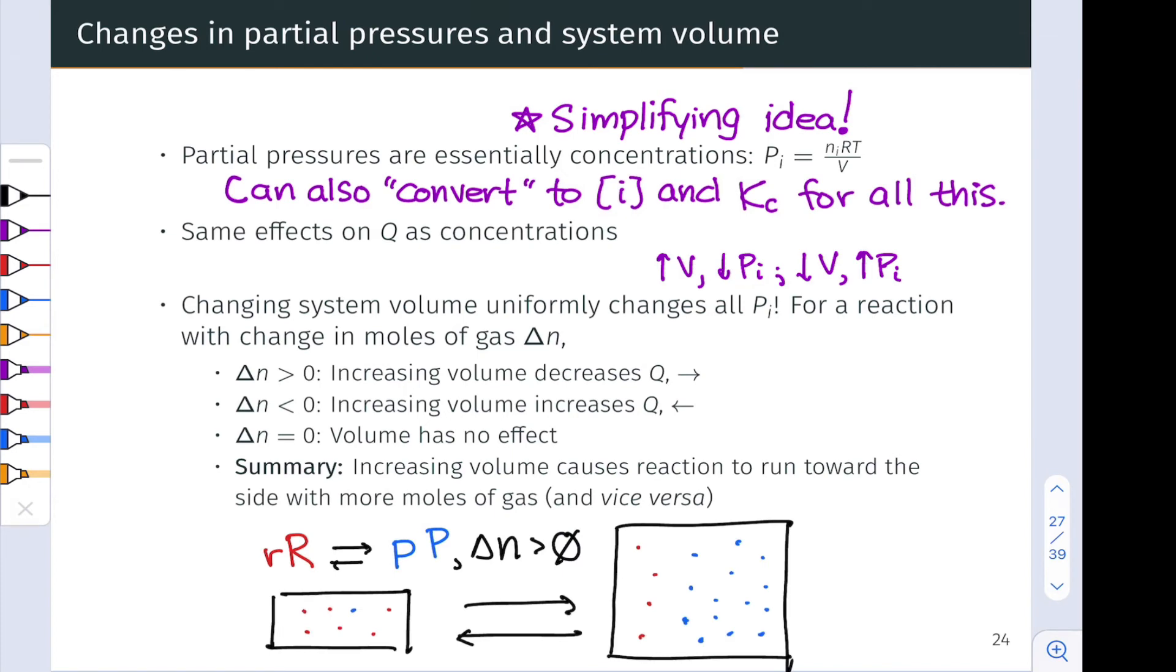So, here's an image that allows us to appreciate what's going on. If, for example, delta n is greater than zero, in other words, little p is bigger than little r, there are more moles of gas on the product side than the reactant side, then when I increase the volume of the system, the reaction system will respond by generating more moles of gas. And it does this by consuming r and producing p, since there are more moles of p on the product side than there are moles of r on the reactant side in the balanced chemical equation.